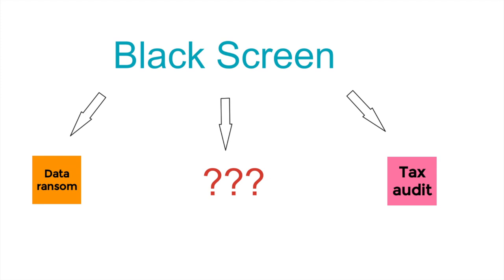For example, you may no longer have access to your purchase records, your sales records, your stock records, and many other records that will be required for the tax audit. And the tax commissioner requires those same records and data that someone is holding.